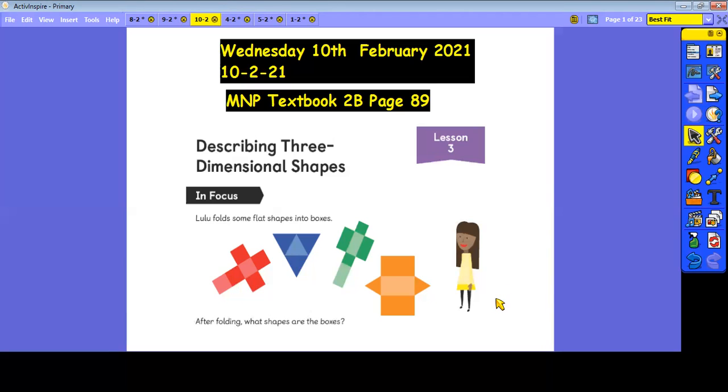Let's have a little look at what Lulu has done. Lulu has folded some flat shapes into boxes. After folding, what shapes are the boxes? She's got some 3D net shapes, and we have to guess what each of these flat shapes would make when folded. Let's work through this together.